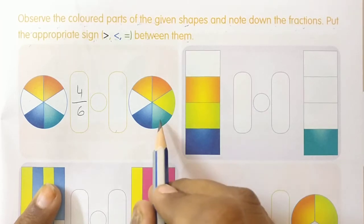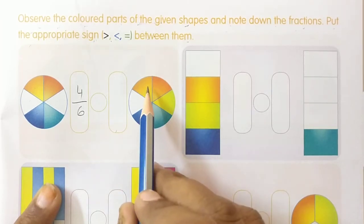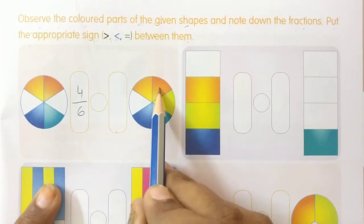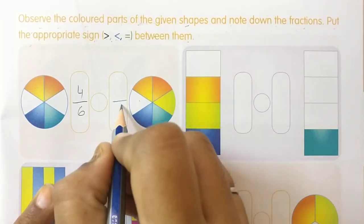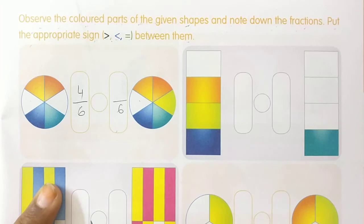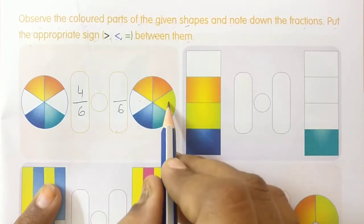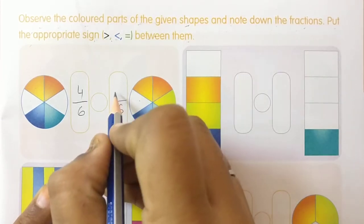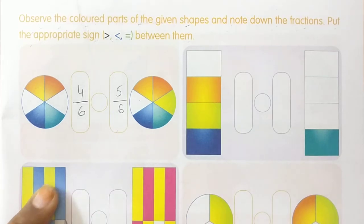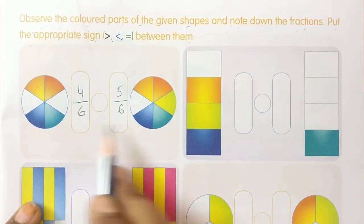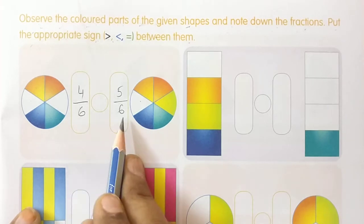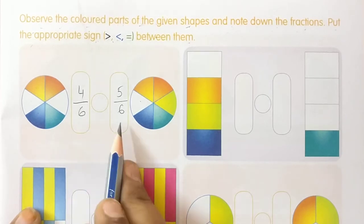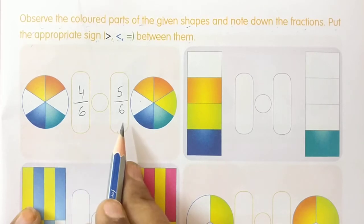Same process for the next shape. How many parts do you have? 1, 2, 3, 4, 5, 6 — total 6 parts. How many are shaded? 1, 2, 3, 4, 5 — so 5 are shaded. By observing these two fractions, the denominator is 6 in both cases. Both denominators are equal, so these two are like fractions.